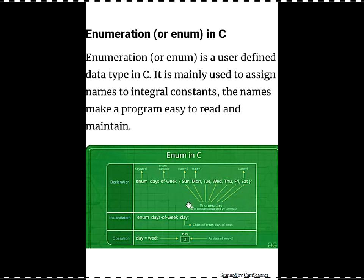When you use enum, this becomes a user-defined data type — our own data type — and this data type can only have these seven values from Sunday to Saturday. When declared in this manner, you are creating one enumeration called days_of_the_week, just like int or float — you create a data type with only these seven values. Sunday will have constant number 0, Monday will have 1, and so on until Saturday will have constant number 6.